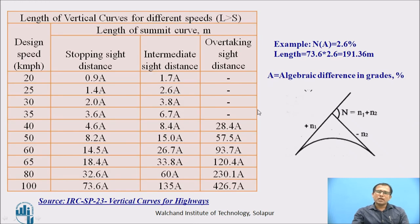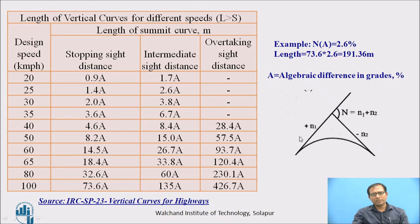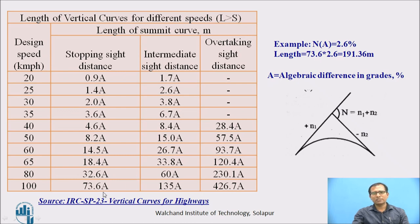A ready-made table from codal provisions helps during design of horizontal and vertical curves. For stopping sight distance at 100 kmph, the length L = 73.6 × a, where a is the deviation angle (algebraic difference of the two grades). For overtaking sight distance with a grade change of 0.6%, L = 73.6 × a gives 191.36 m — use this table to verify compliance with codal provisions.